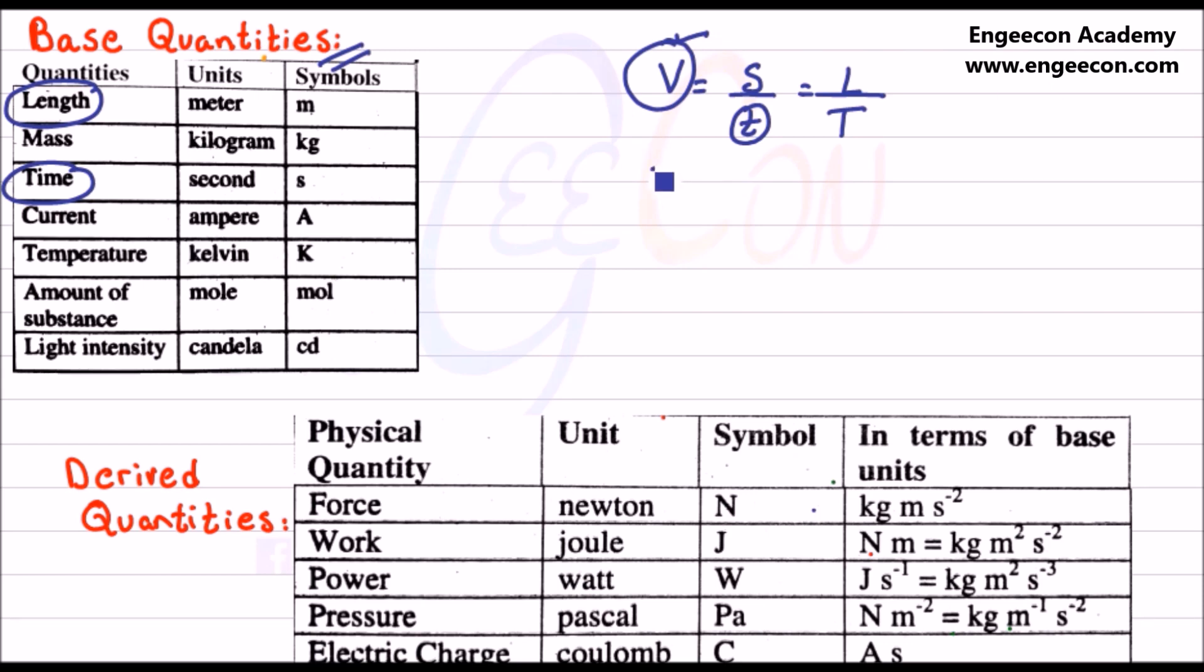Let's explain acceleration which is a derived quantity known as time rate of change of velocity. If we write it in terms of base quantities then it will be length per time divided by time, which is equal to length divided by t squared. So both length and time are base quantities and acceleration is a derived quantity.